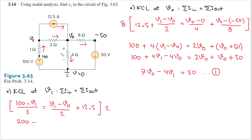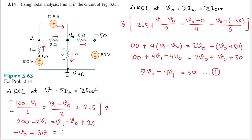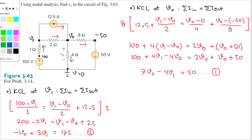Multiplying both sides by 2: we get 200 minus 2v1 on the left, and (v1 minus v0) plus 25 on the right. Rearranging: 3v1 minus v0 equals 200 minus 25, which is 175. This is equation number two: 3v1 minus v0 = 175.